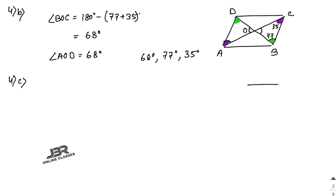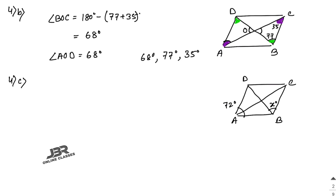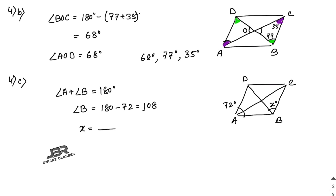Sum number 4c: ABCD is a rhombus with all sides equal. The whole angle A = 72°. Since adjacent angles in a rhombus are supplementary, angle B = 180 − 72 = 108°. The diagonal bisects angle B, so x = 108/2 = 54°. This is because the diagonals of a rhombus bisect the angles.